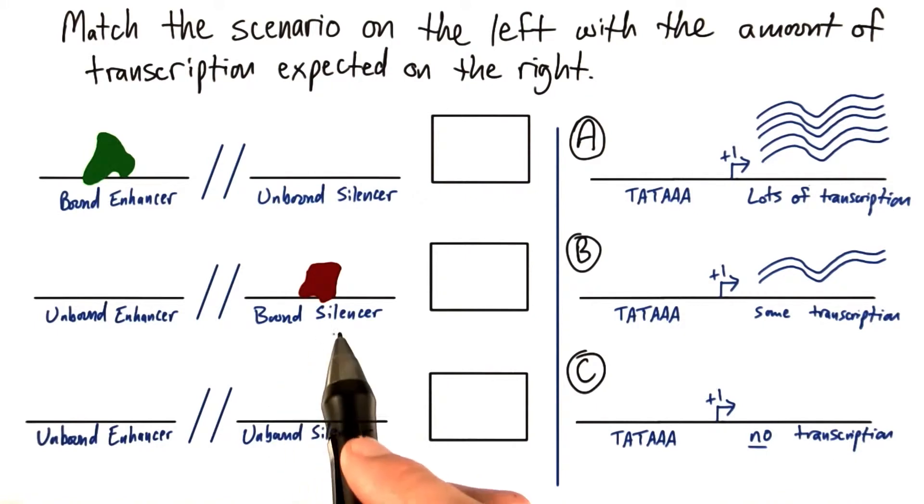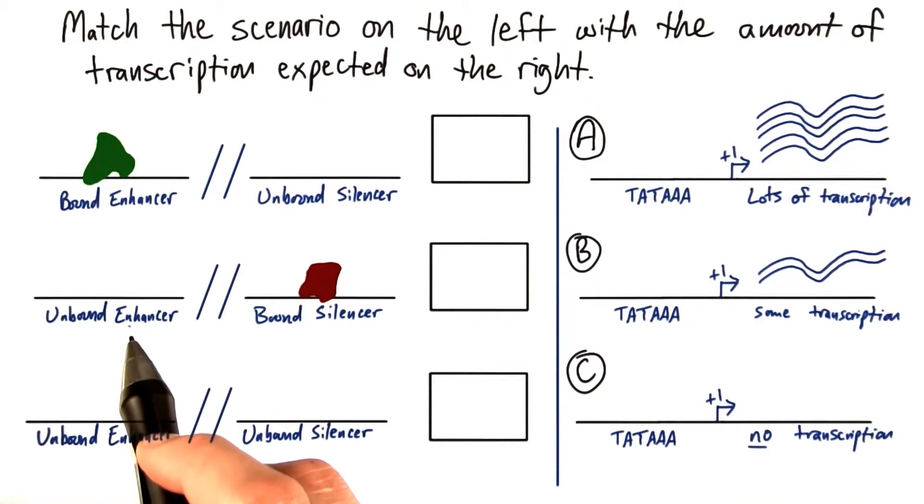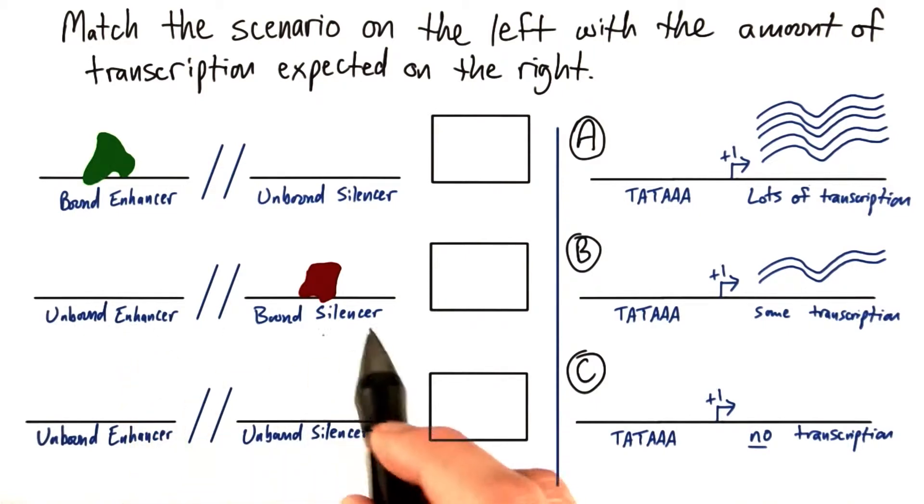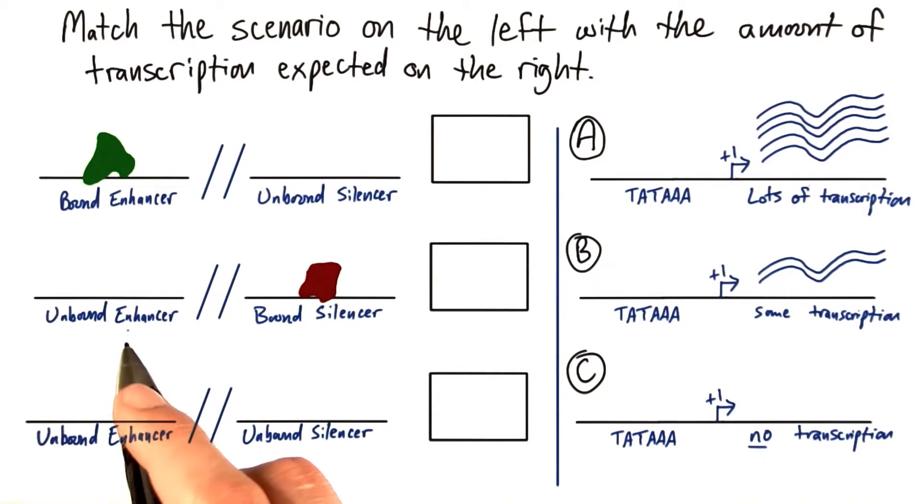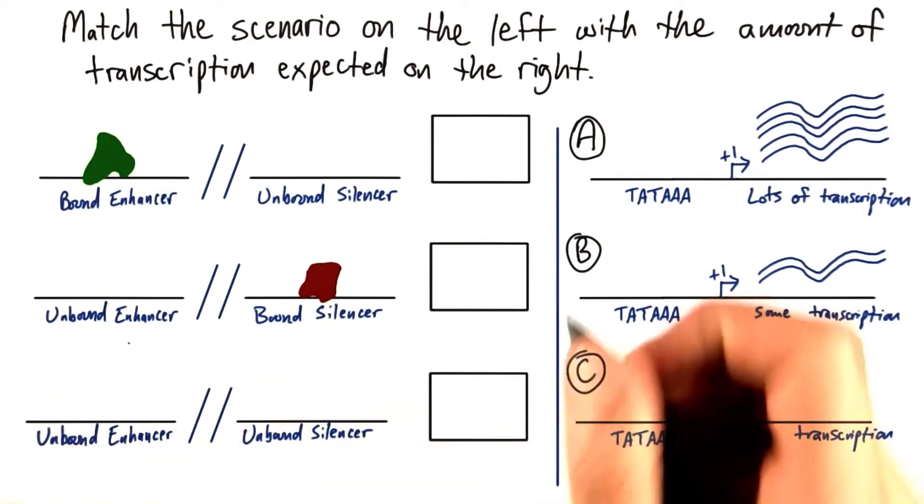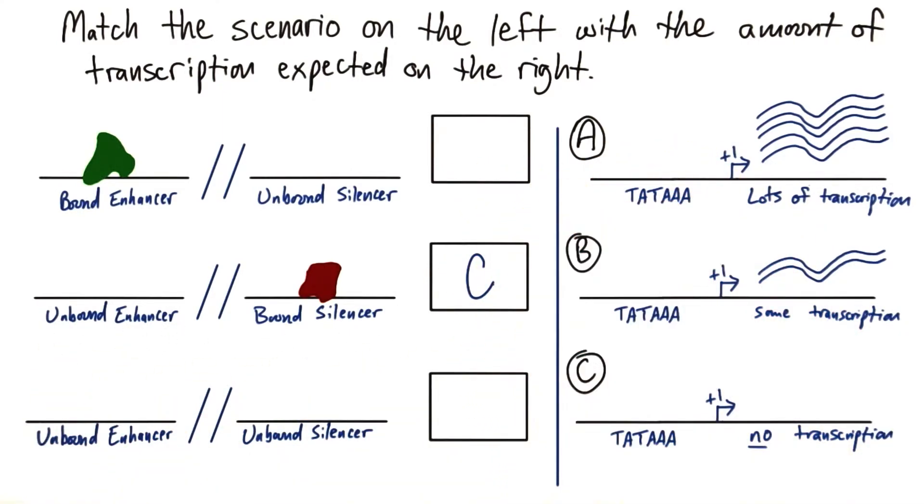Well obviously if our silencer is bound, that silences transcription. Enhancer enhances transcription. So if we've silenced our transcription and we don't have anything to help enhance, this is probably the scenario in which we're going to have little to no transcription at all.